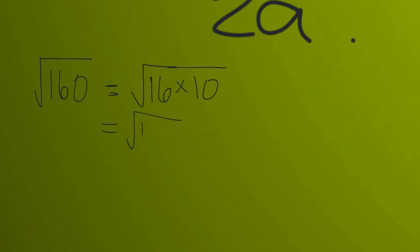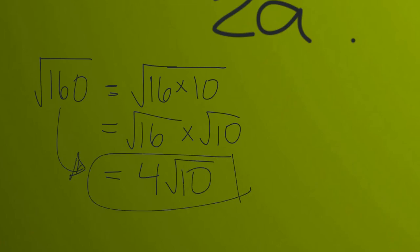This can be thought of as the square root of 16 times the square root of 10. And of course, the square root of 16 is simply 4. So 4 root 10 is the mixed radical, or the simplest form of the square root of 160.